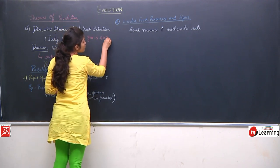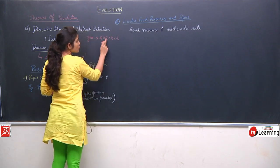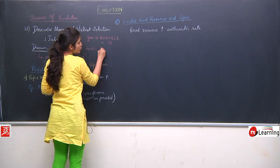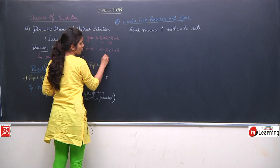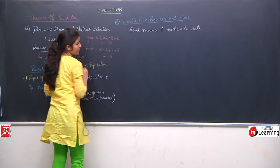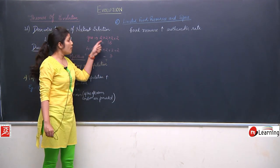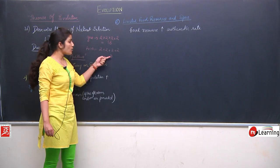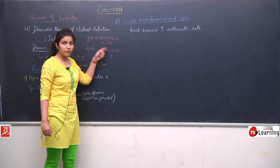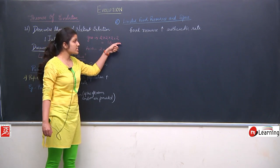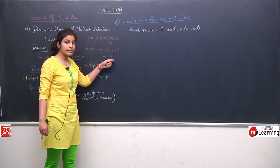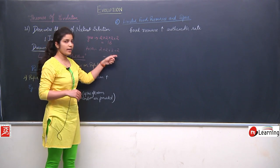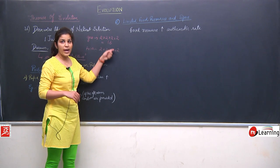Geometric rate means 2×2×2×2, so 2→4→8→16. Arithmetic rate means 2+2+2+2, so 2→4→6→8. Where the population reaches 16 at geometric rate, food resources only reach 8 at arithmetic rate. Geometric rate increases very fast while arithmetic rate increases slowly, so food resources are roughly half that of the increasing population.